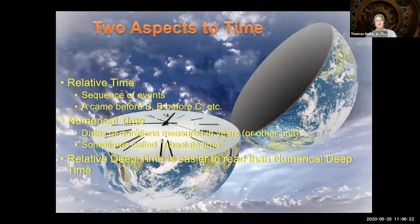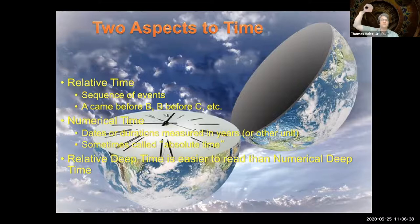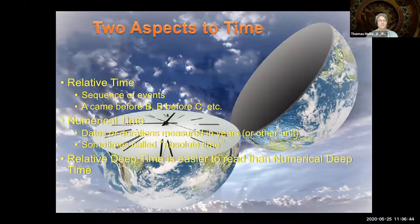Relative deep time is much easier to read, especially out in the field, than numerical deep time. Not surprisingly, the discovery of how to read relative sequence in time was made much earlier than our understanding of how to read numerical time. You can be working at an outcrop and determine sequences of events, and even where you are in the relative timescale, without being able to say for certain we are at 87.35 plus or minus 0.2 million years ago.